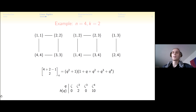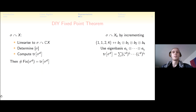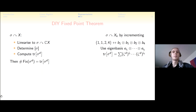To summarize: we started with an action on a finite set X (in this case k-fold multisets with sigma incrementing elements), linearized it to a vector space action, determined the matrix form using our eigenbasis, computed the trace as zeta evaluations of a polynomial, and used the fact that the trace counts fixed points. This gives us our fixed point theorem for this action.